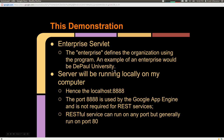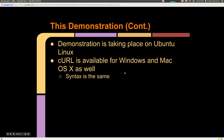In my demonstration I'm going to be using the enterprise servlet. An enterprise in our class defines the organization using the program, so an example of an enterprise might be DePaul University. The server will be running locally on my computer — you'll see localhost with a port of 8888. Port 8888 is used by Google App Engine and is not required for a REST service; a RESTful service can really run on any port, but it's generally run on port 80. My demonstration is going to be on Ubuntu Linux. Curl is also available for Windows and Mac, and the syntax between all platforms is the same.